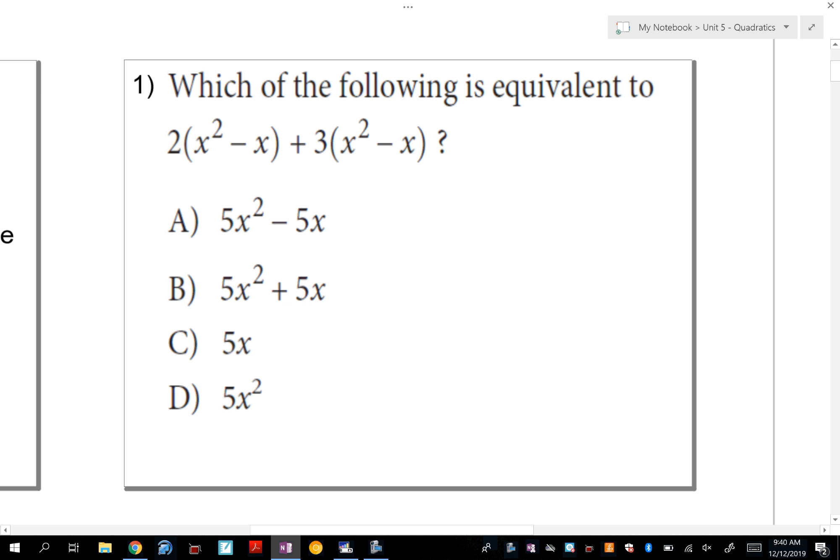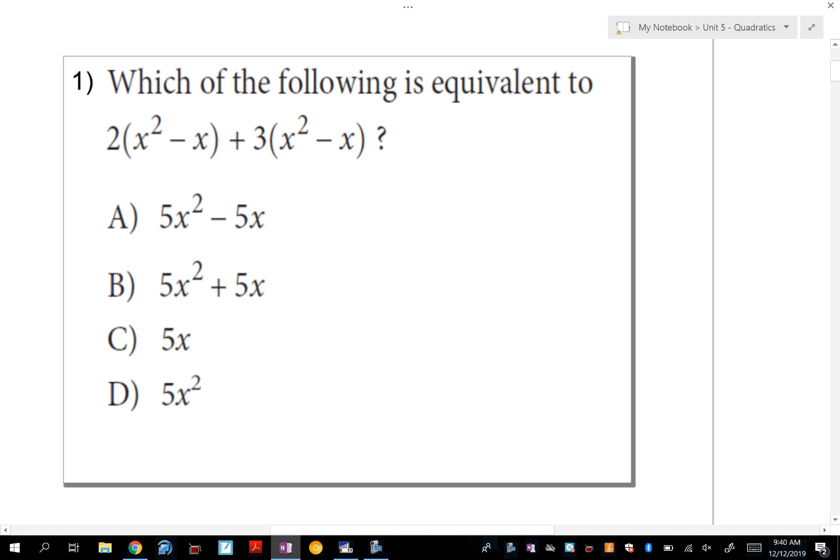So number one, which of the following is equivalent to 2(x² - x) + 3(x² - x)? Most students are distributing the numbers that are in front, so they're writing 2x² - 2x + 3x² - 3x. And if you combine like terms, you get 5x² - 5x. Totally fine. So the answer is A.